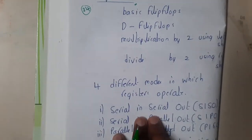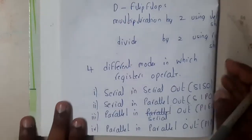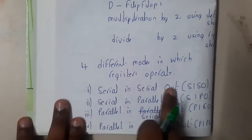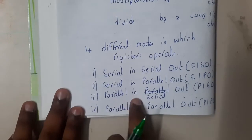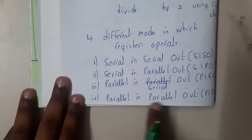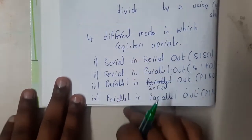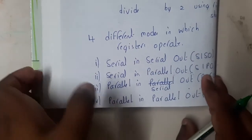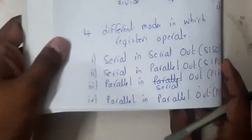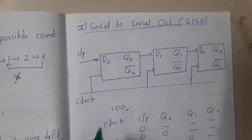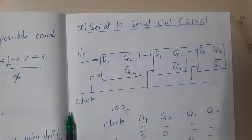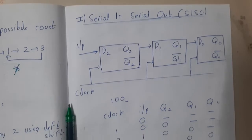Any register can be operated in four different modes: Serial In Serial Out, Serial In Parallel Out, Parallel In Serial Out, and Parallel In Parallel Out. These are the four modes in which registers can be applied.